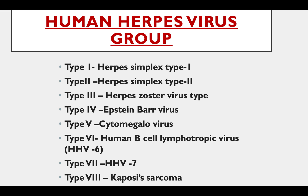Type 6 — Human B Cell Lymphotropic Virus (HHV-6); Type 7 — HHV-7; Type 8 — Kaposi's Sarcoma-associated Herpesvirus. Thank you.